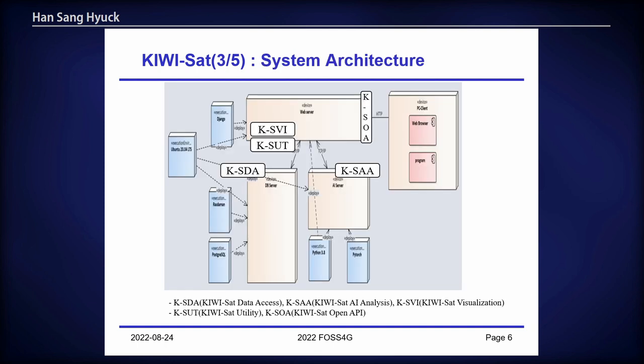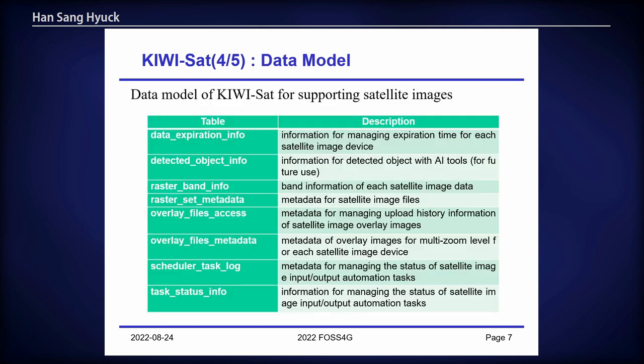Let's see the system architecture of QSET. It consists of five major components. For effectively managing various types of satellite images, we designed and constructed satellite image-related metadata. There are eight tables for that.